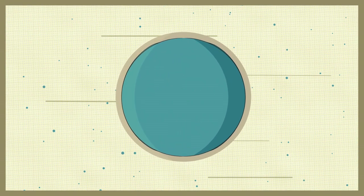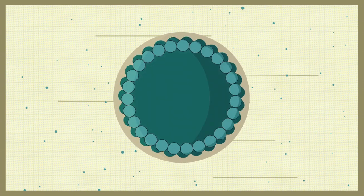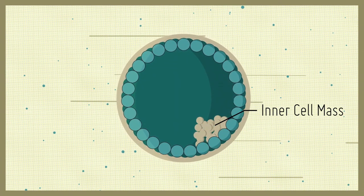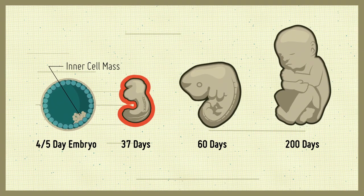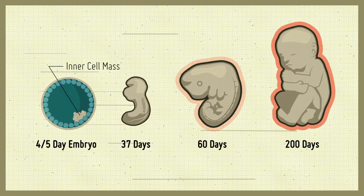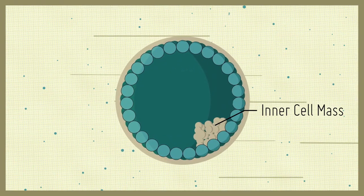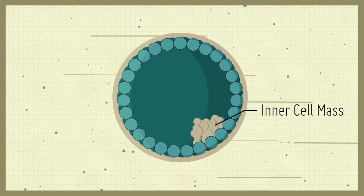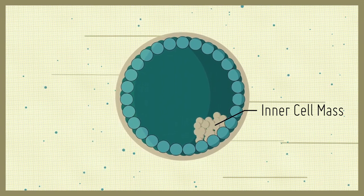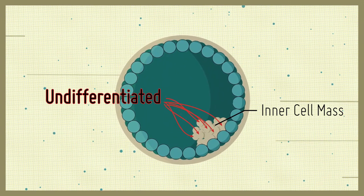Following fertilization, the developing embryo contains a group of cells known as the inner cell mass, that will eventually go on to form all tissues of the body. However, at this early stage of development, these cells have not yet committed to become a specific type of cell and are said to be in an undifferentiated state.